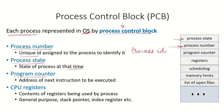The information about the program counter is also there. This process is a program in execution, meaning instructions are being executed. So the address of the next instruction that is to be executed is available in the program counter. This is a special purpose register and is also maintained in the process control block.